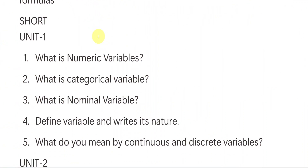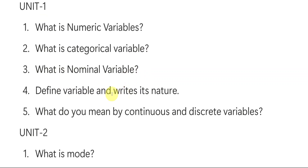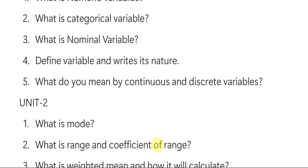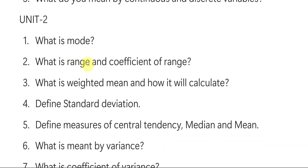We have seen the long important questions from all five units. Now let us go to the short important questions. From unit number one: What is a numeric variable? What is a categorical variable? What is a nominal variable? What is a variable and its nature? What do you mean by continuous and discrete variables? These questions related to variables will be given in unit number one.